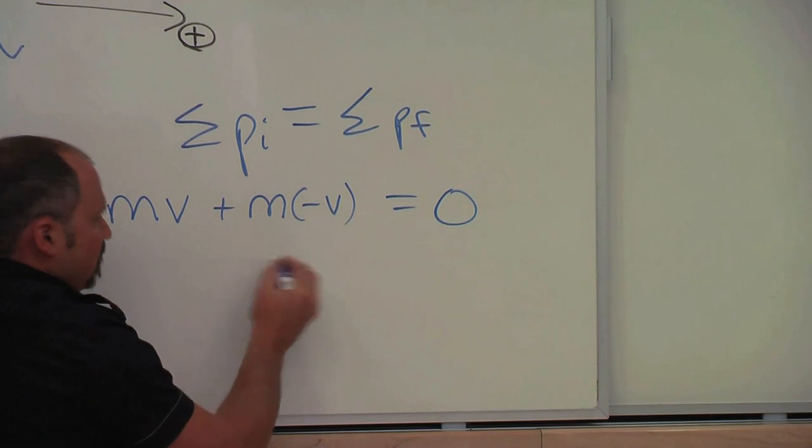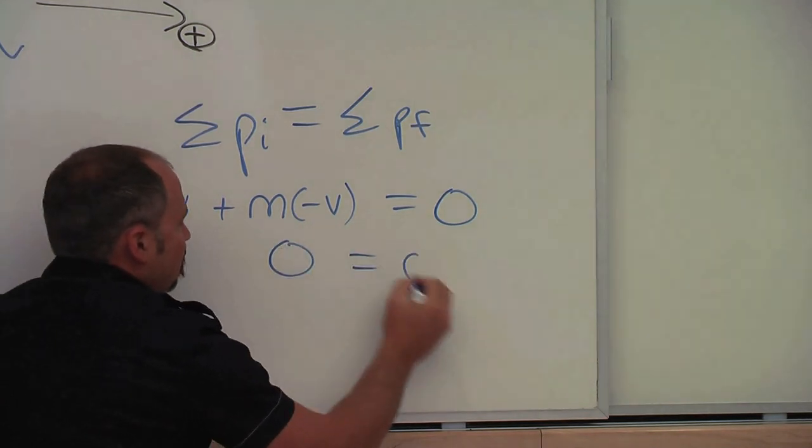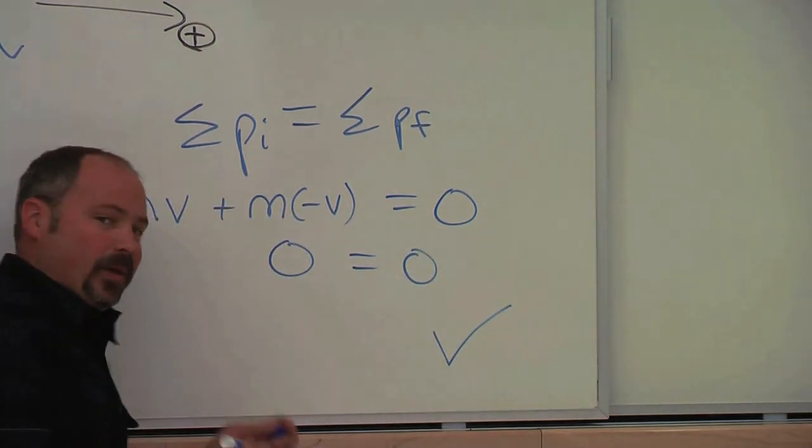And sure enough, MV plus minus MV is also zero. Excellent. Momentum is conserved. This last type of collision is called a completely inelastic collision.